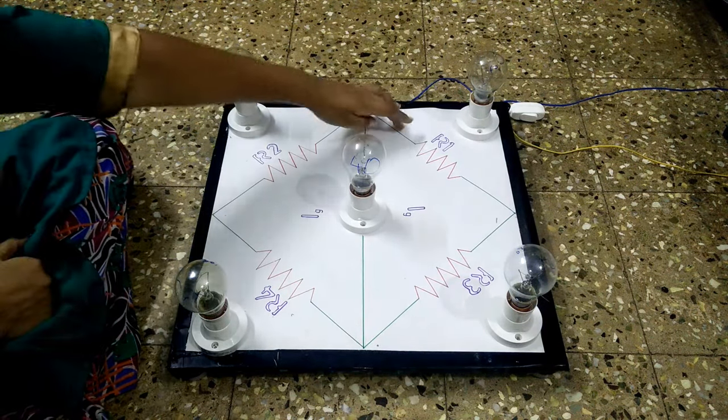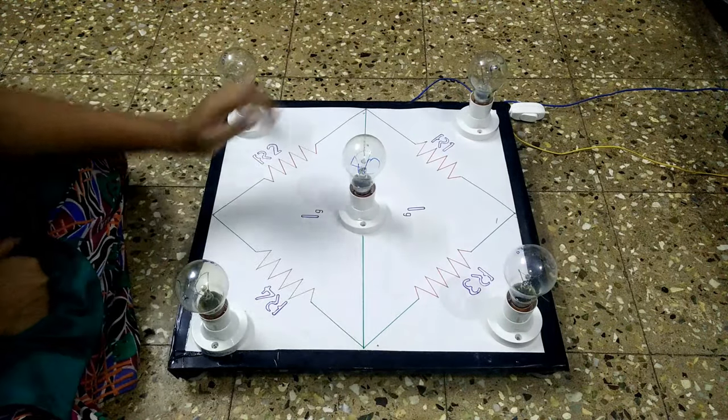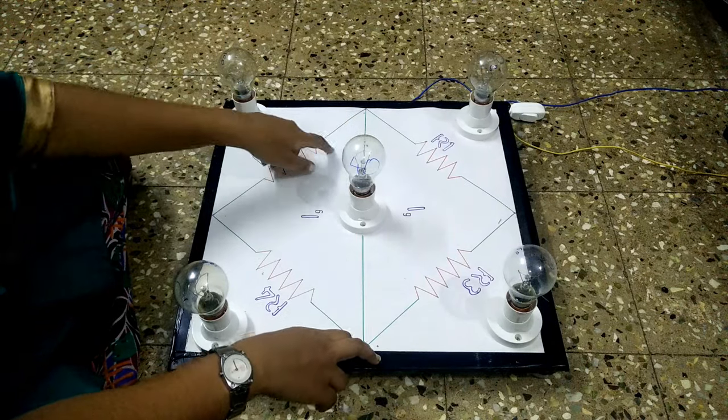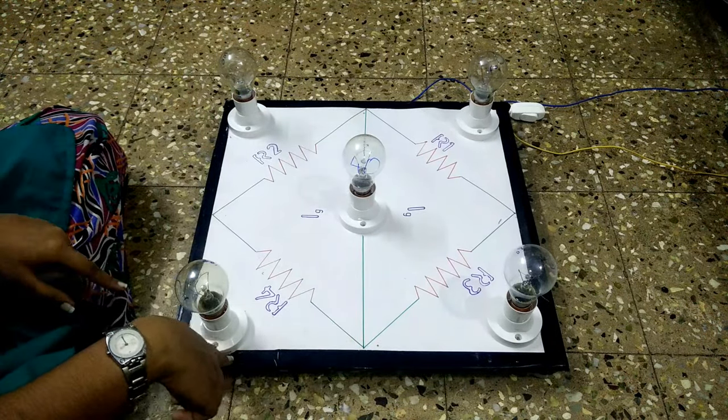The bulbs R1 and R2 are in series, R3 and R4 are in series. But these combinations are in parallel with each other. This circuit can also be called a two series parallel combination circuit.